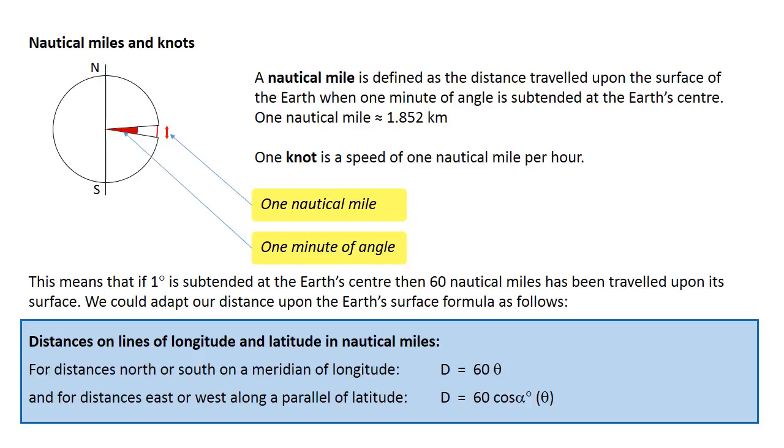One nautical mile is approximately equal to 1.852 kilometres. One knot is a speed of one nautical mile per hour. The definition of nautical miles means that if one degree is subtended at the Earth's centre, then 60 nautical miles have been travelled upon its surface.